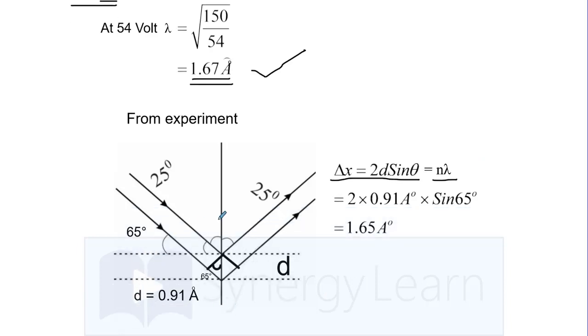For the nickel crystal, when the total angle is 50 degree, the semi angle will be 25 degree, and therefore this angle will be 65 degree, 90 minus 25 degree. The extra path which electron beam will travel will be d sin theta, just like Bragg's law. We have here 2d sin theta. The d for nickel crystal is 0.91 angstrom. Substituting 0.91 angstrom and 65 degree, sin theta is 1.65 angstrom.